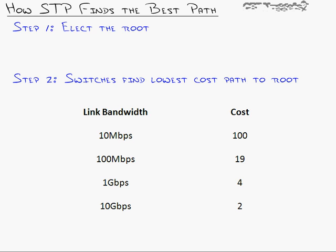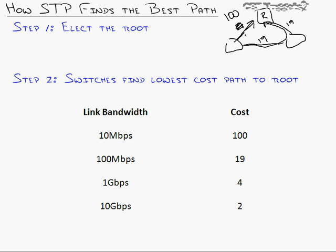The two major steps of how Spanning Tree finds the best path: Step 1 — elect the root. Step 2 — all switches find the lowest cost path to the root based on link speeds. If all links are 100 Mbps, they're all cost 19 and each switch picks the direct route. If one link is 10 Mbps (cost 100), that switch will prefer the alternative path at cost 38 (two 100-Mbps hops) and block the slow link, since 38 is better than 100.